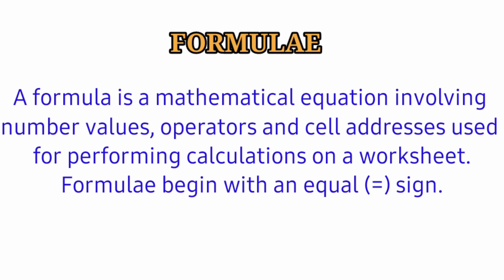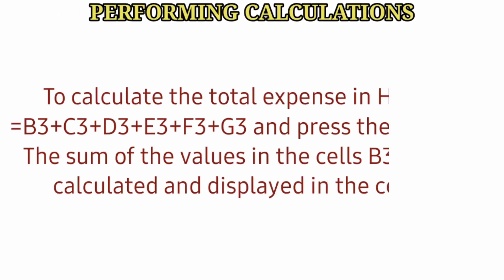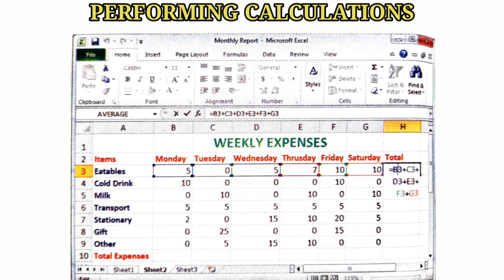Performing calculations - to calculate the total expense in H3, type =B3+C3+D3+E3+F3+G3 and press the Enter key. The sum of the values in cells B3 to G3 is calculated and displayed in cell H3.